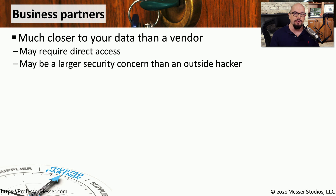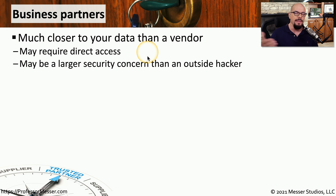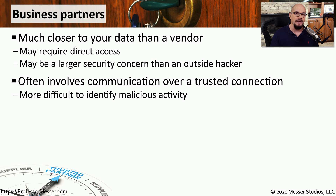Your organization may have a third party you work with very closely that's not a vendor, but more of a business partner. In that case, there may be direct network connections between your corporate network and the business partner's network. Because of this relatively open path between the two organizations, there could be significant security concerns. For example, it's very common to build an IPsec connection between organizations and transfer information through that encrypted tunnel, but it's important to monitor this for any malicious activity.